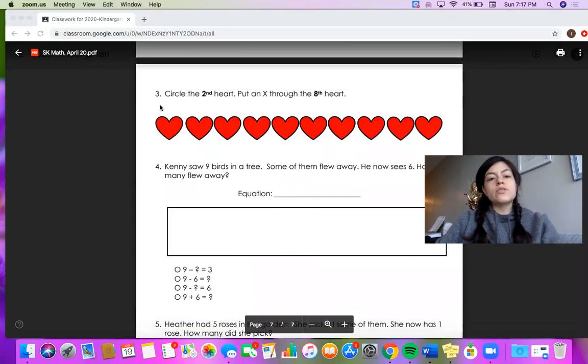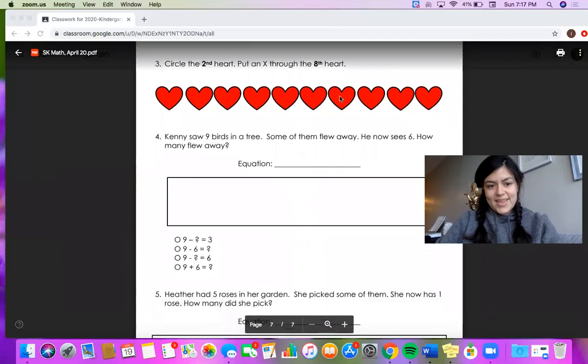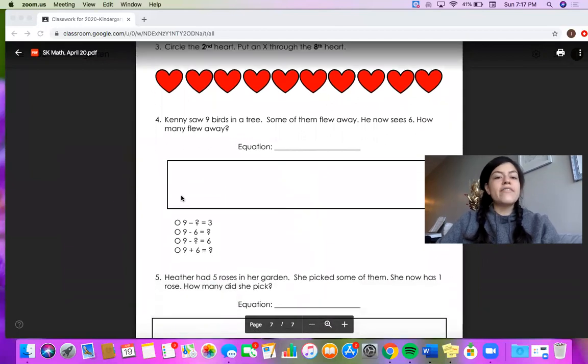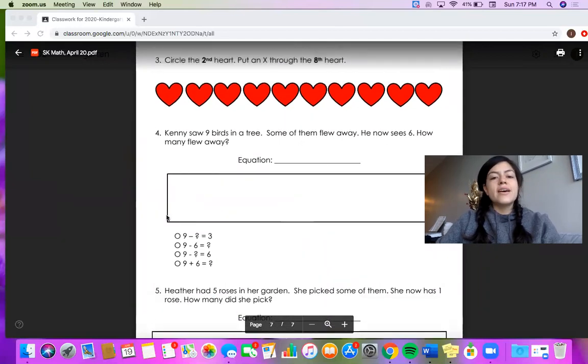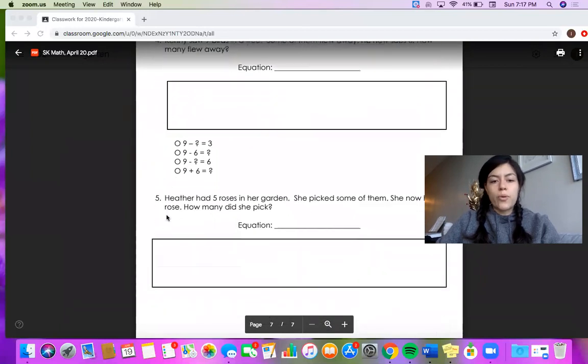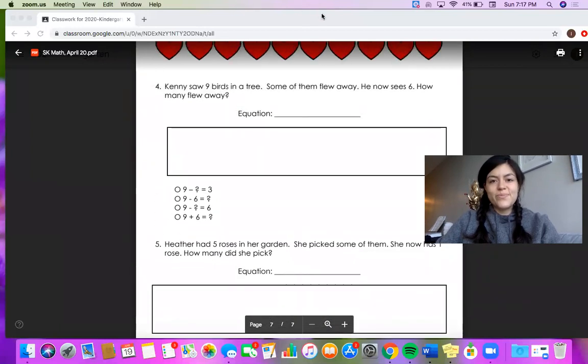And then the second page of your review has nothing to do with measurement. It's just a math review. So this one is about ordinal numbers. For number three, circle the second heart and put an X through the eighth heart. And then questions four and five have a little bit of addition subtraction review. All right SKs, that's all for me. Time to start your measurement unit review. I'll see you later. Have a great day.